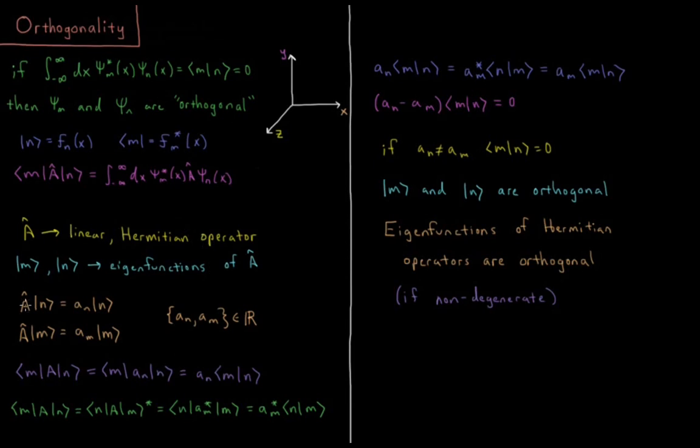So A acting on function n gives us the constant a_n times the function n. A acting on the function m gives us a_m times the function m. And each of those are scalars, which are real numbers, because these are eigenvalues of Hermitian operators, which we saw in the previous videos have to be real numbers.